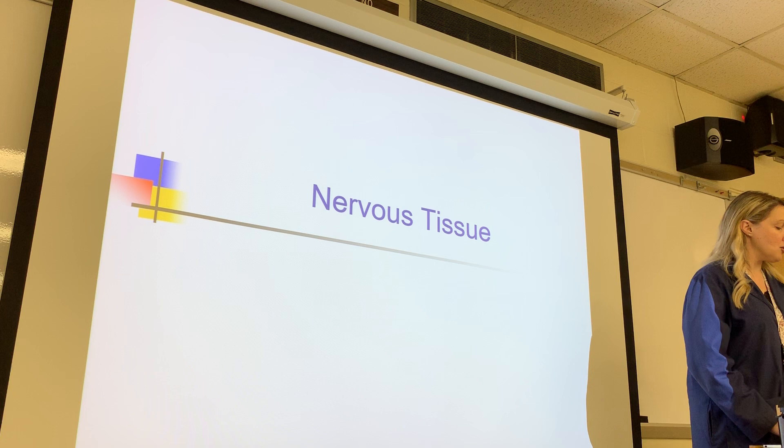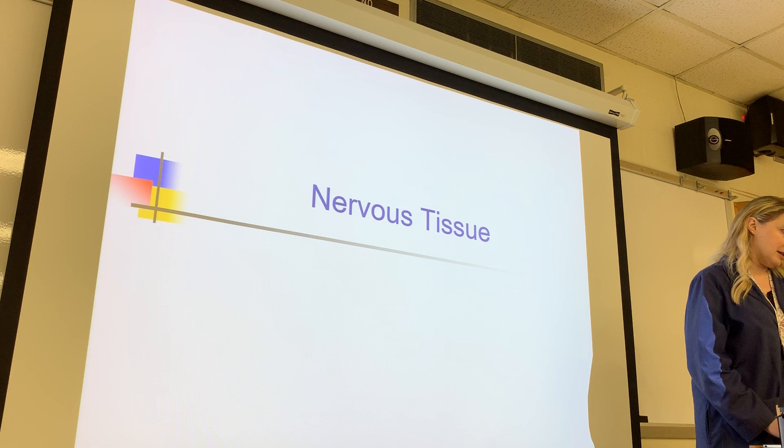Next is nervous tissue, which is a fairly straightforward tissue. Two types of cells make it up. The hardest tissue to cover is connective tissue, which is saved for last.